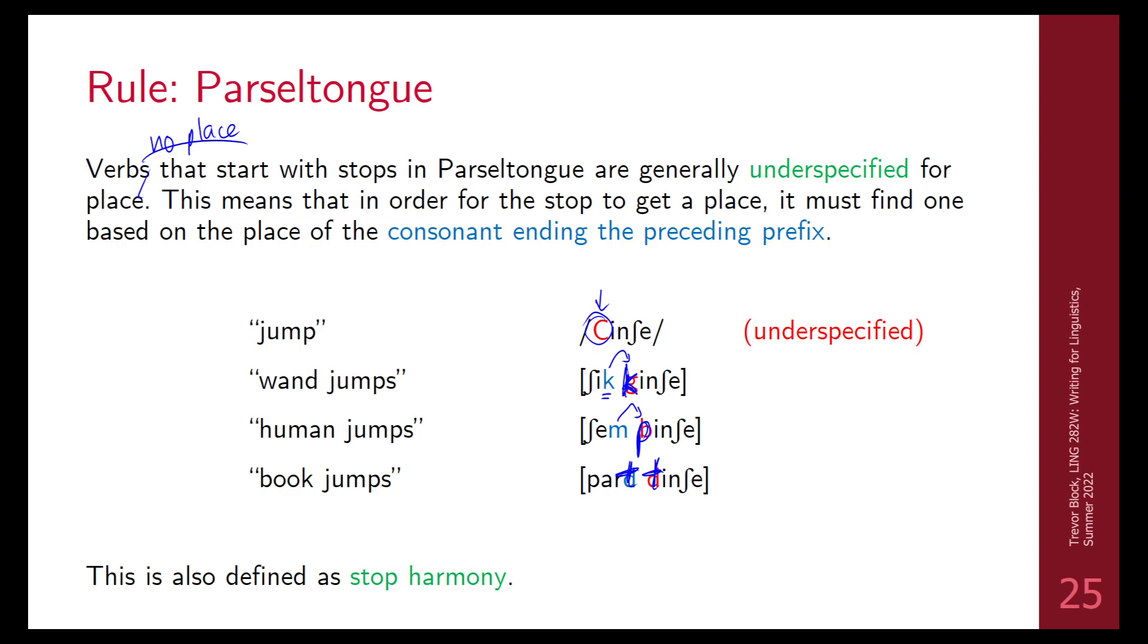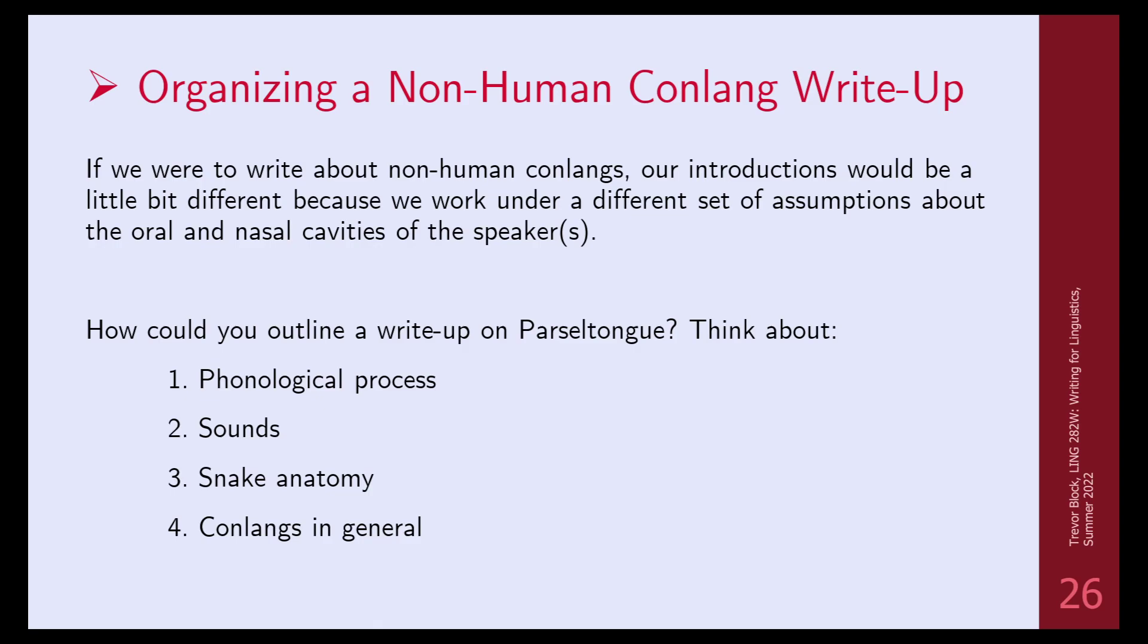This is a process that happens in natural language as well. This is called stop harmony. There are a lot of cases where you have unspecified sounds. You might have a language where you might have a noun with an unspecified stop. It doesn't have a place until it gets another sound before, in which case it changes and takes the same place as an m and it'll get a b. You'll see this with fricatives, not really with vowels too much, but normally with stops and fricatives. Stop harmony is also a common process in languages.